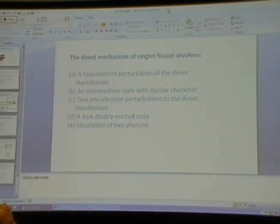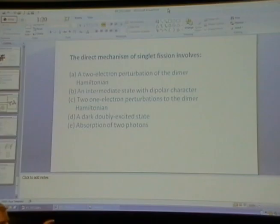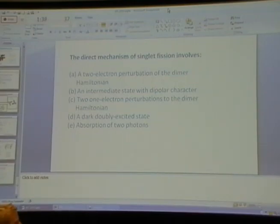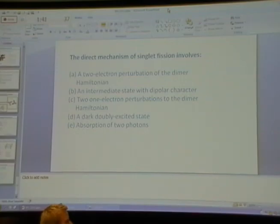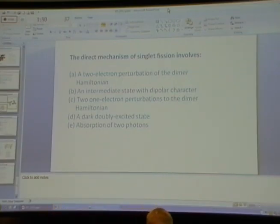The answer to the last clicker question: the direct mechanism of singlet fission involves a two-electron perturbation of the dimer Hamiltonian — pushing two electrons simultaneously to the double triplet state, with no intermediate polar charge-transfer state. It's not two one-electron perturbations, which would be the indirect mechanism, and we're only absorbing one photon in this case.